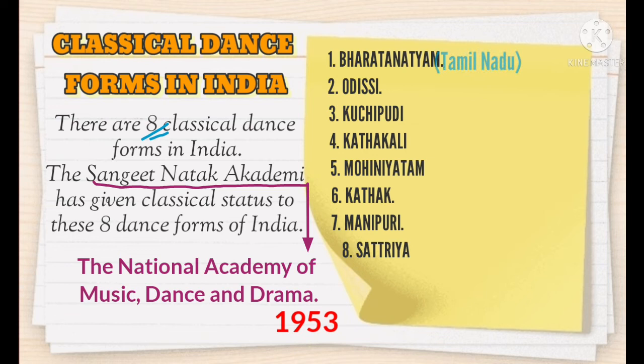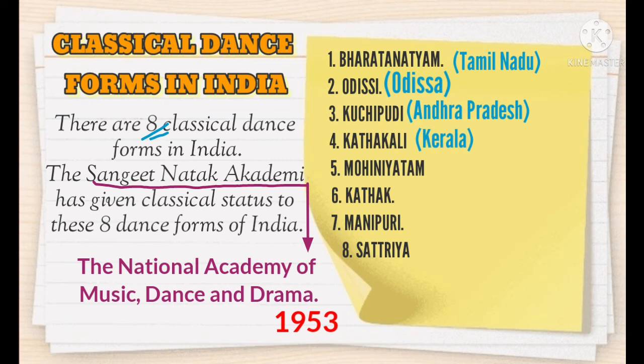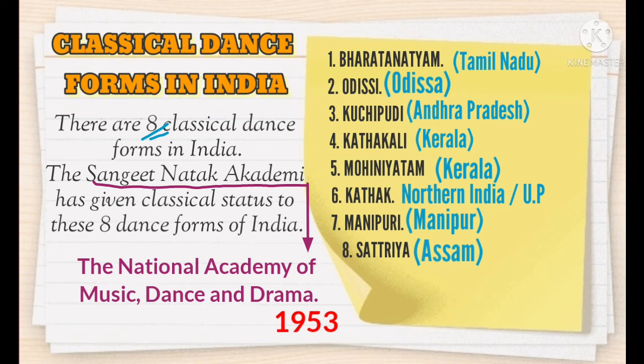Bharatnatyam has originated in Tamil Nadu; Odissi in Orissa; Kuchipudi in Andhra Pradesh; Kathakali in Kerala; Mohiniattam also in Kerala; Kathak in the state of Uttar Pradesh or Northern India; Manipuri in Manipur; and Satriya in Assam.